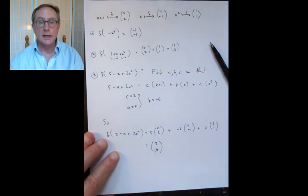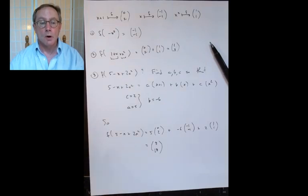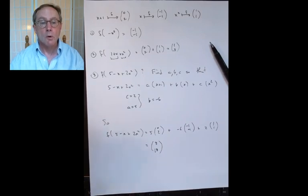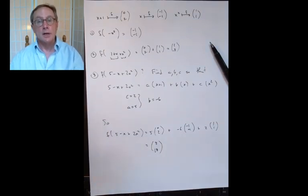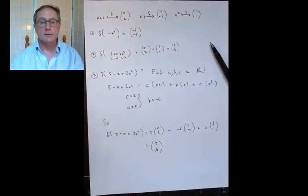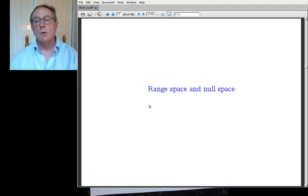So if you know what is the action of the function on the basis, all you have to do is find the coordinates of the given input with respect to the basis, drop them right in, and the rest is arithmetic. Extending linearly is a computational scheme — we don't have to express the function on all the space at once. We can just express it on the basis, and the rest follows immediately.